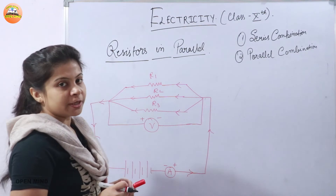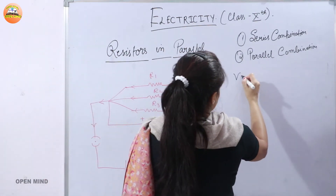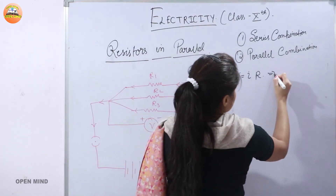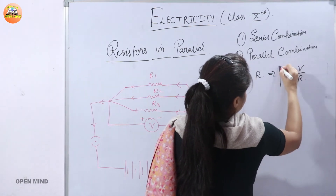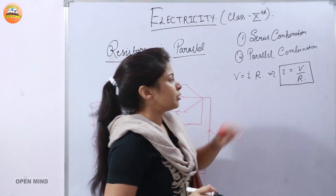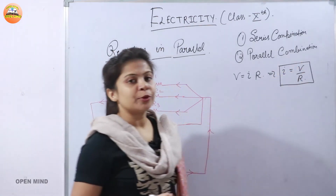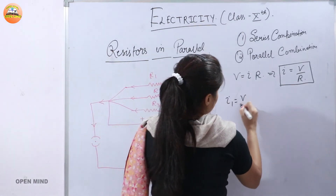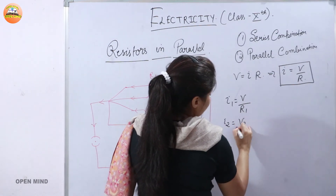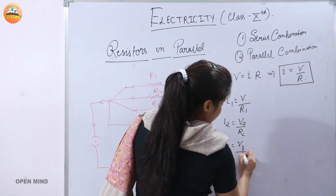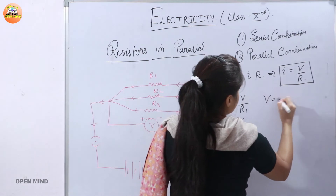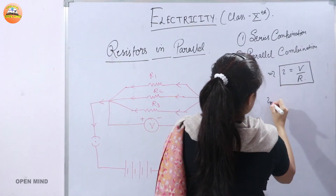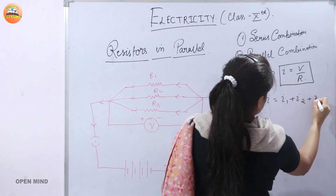Since the potential difference across the two ends of the circuit remains the same, from Ohm's law V = IR, we get I = V/R. The total current I equals V divided by the total resistance R. Similarly, I1 = V/R1, I2 = V/R2, and I3 = V/R3. The total current is distributed as: I = I1 + I2 + I3, because the input current equals the sum of currents through all branches.